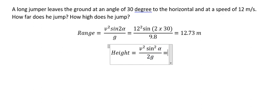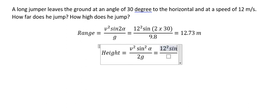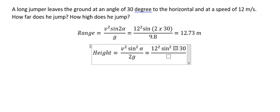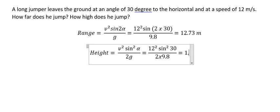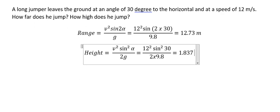We have the numbers here. We input 12 squared multiplied by sine 30 degrees squared, divided by 2 times 9.8, and we get about 1.837 meters.